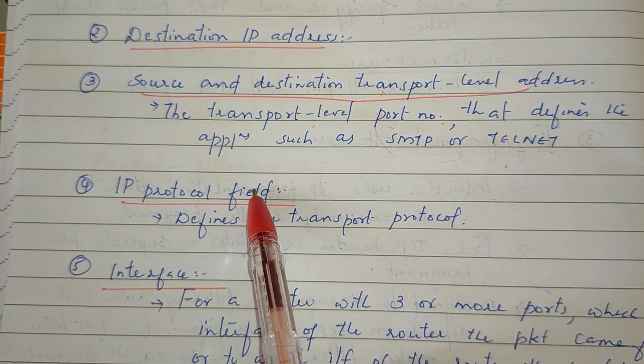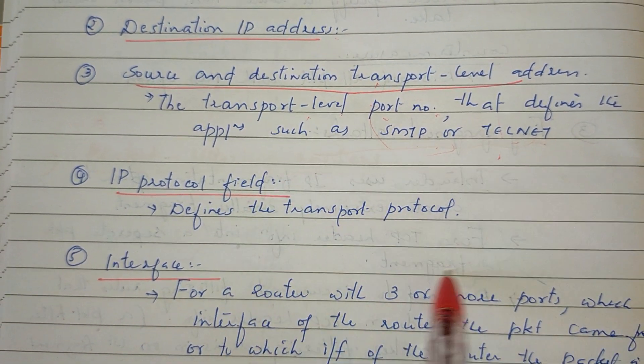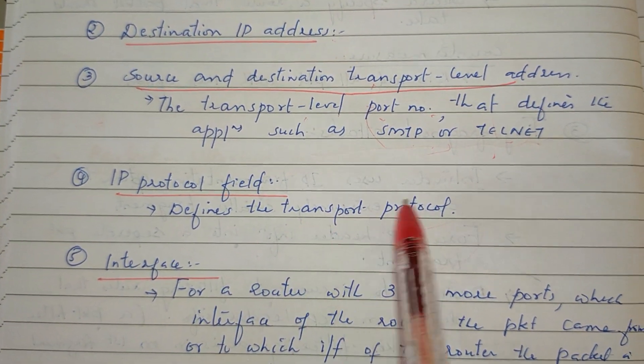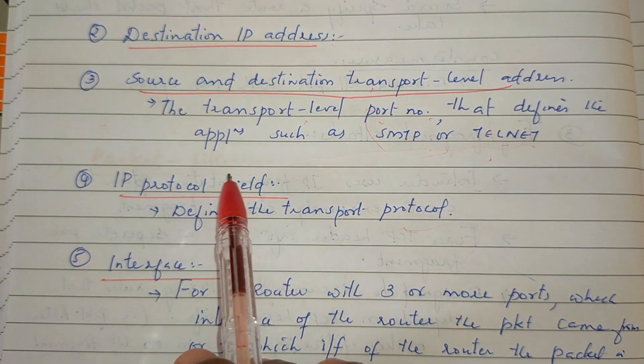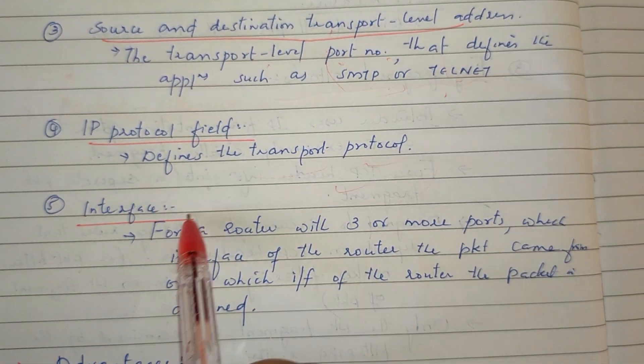Additional filtering criteria include the IP protocol field, which identifies which transport protocol is in use — TCP or UDP — and the interface, which specifies which network interface the traffic arrives from or departs to.